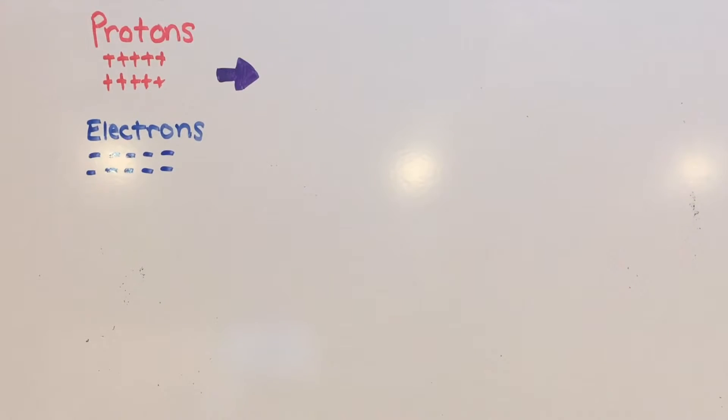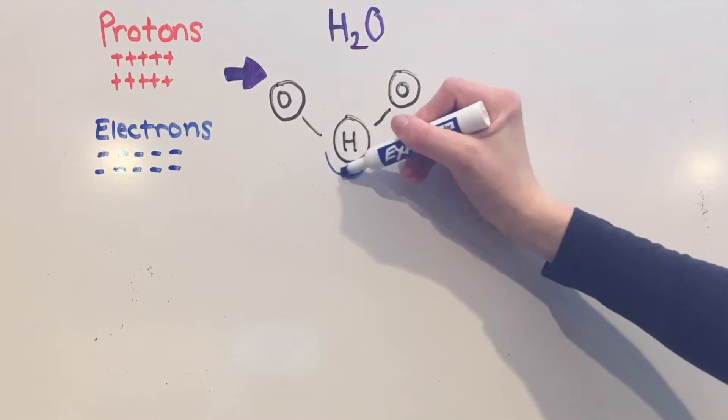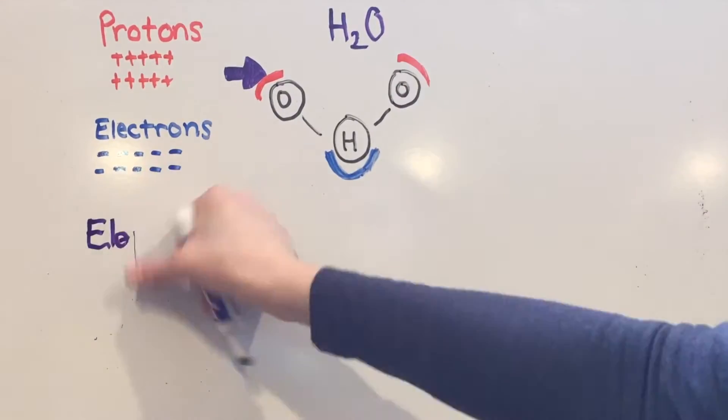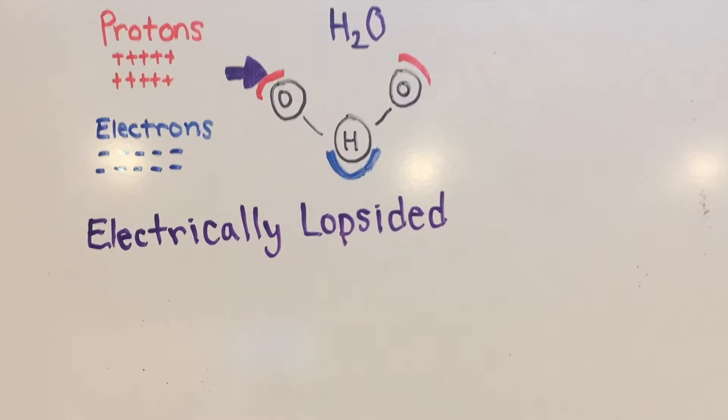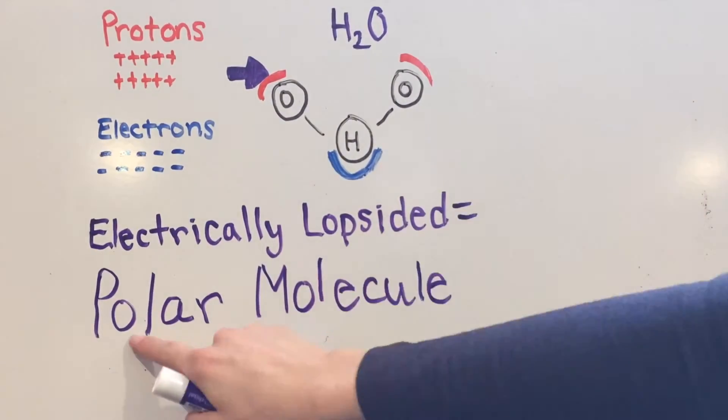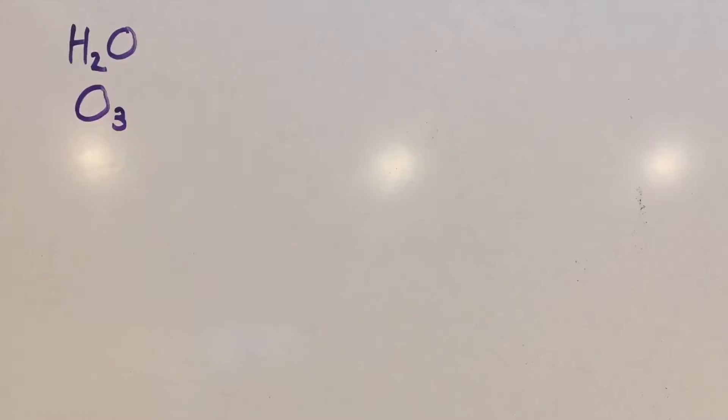In order for greenhouse gases to absorb electromagnetic radiation, they need electrically charged particles. However, most of Earth's atmospheric gases do not possess an electric charge because they have a balanced number of protons and electrons. Thus, polar molecules enable this function. Water vapor is a polar molecule because the electrons are unequally shared between the hydrogen and oxygen atoms.